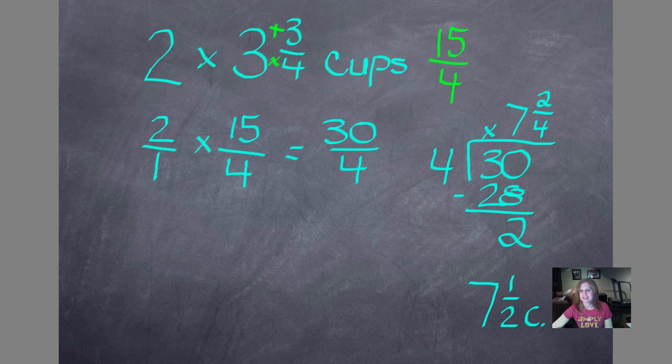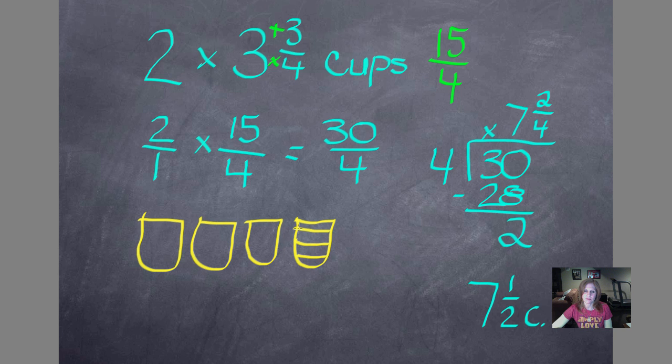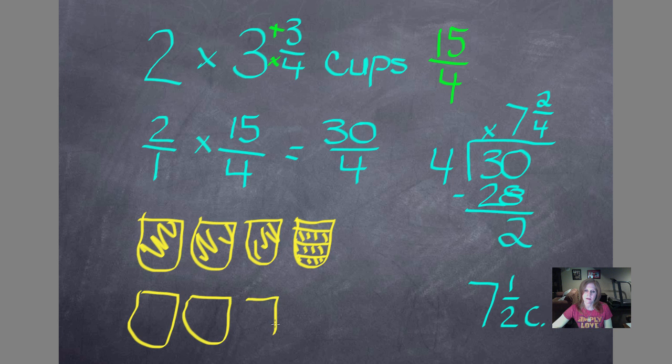I want to show you how we get that. If I draw the 3¾ cups that I need for the first batch, I'm going to divide that into four parts and color in three of them. So there's 3¾. These three are all full. And then for my second batch, I need 3¾ more.